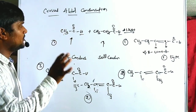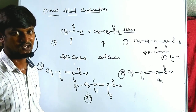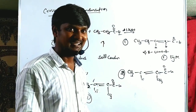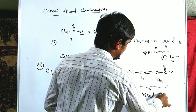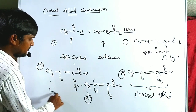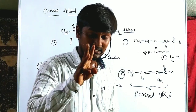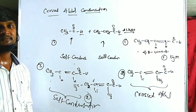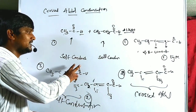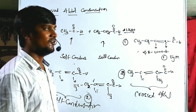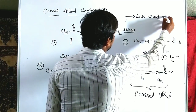So when both aldehydes have alpha hydrogens, we will get four types of products: the first and second are cross-aldol products, and the third and fourth are self-condensation products. If both aldehydes have alpha hydrogen, it gives four types of products — two crossed and two self-condensation. This is very difficult to monitor in a single reaction, and it is less used in laboratory methods.